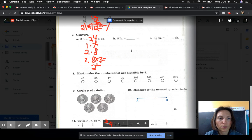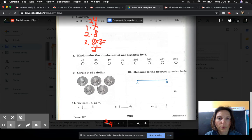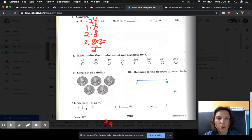And then write greater than or less than. Is 3 sevenths greater than 5 sevenths, or less than or equal? Okay? And finish those.